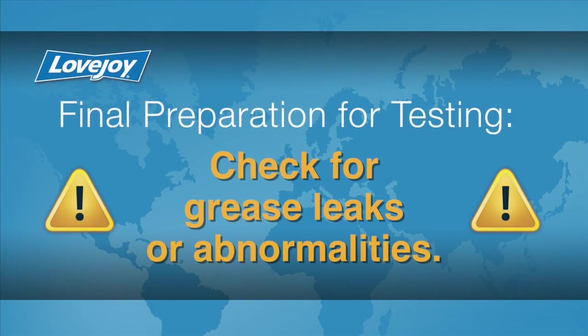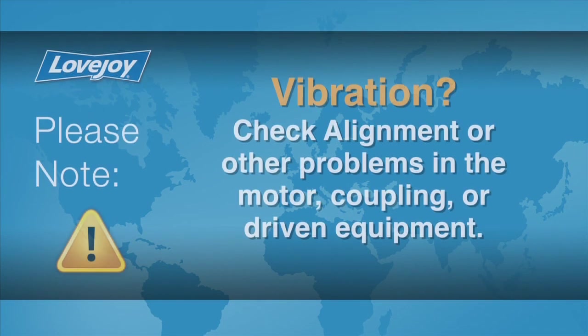The equipment can then be started up and tested. Check the coupling for any possible grease leaks or abnormalities. The coupling and equipment should run smoothly. If any vibration is detected, it could indicate there are alignment issues or other problems, possibly related to the motor, coupling or driven equipment. These issues should be resolved prior to placing this coupling into operation.